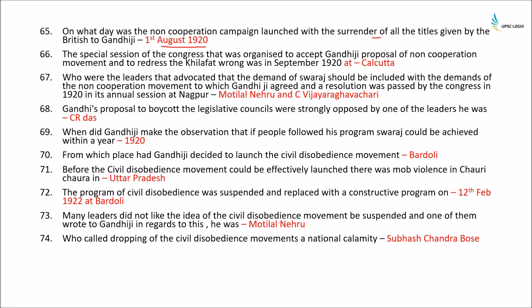A special session of Congress was organized to accept Gandhiji's proposal of the non-cooperation movement and to redress the Khilafat wrong, held in September 1920 in Calcutta. The leaders who advocated that the demand for Swaraj should be included with the demands of the non-cooperation movement were Motilal Nehru and C. Vigravachari. Besides the three demands — remedying the Jallianwala Bagh massacre, the Rowlatt Act, and the Khilafat movement — Swaraj was added as a fourth demand. Gandhiji's proposal to boycott legislative councils was strongly opposed by C.R. Das. Gandhiji observed that if people followed his program, Swaraj could be achieved within a year, in 1920.